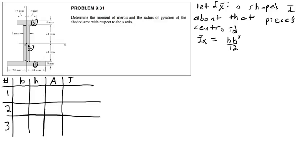Then I_x-bar, which will be for each piece the moment of inertia about that piece's own centroid. For piece three, for example, the I_x-bar will be about its own centroid.